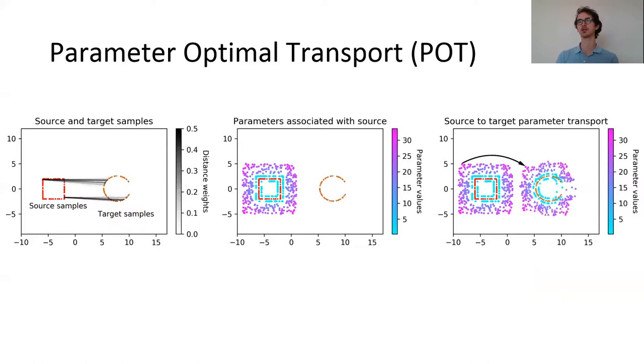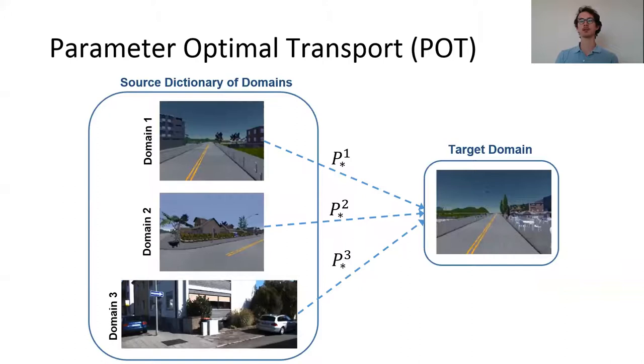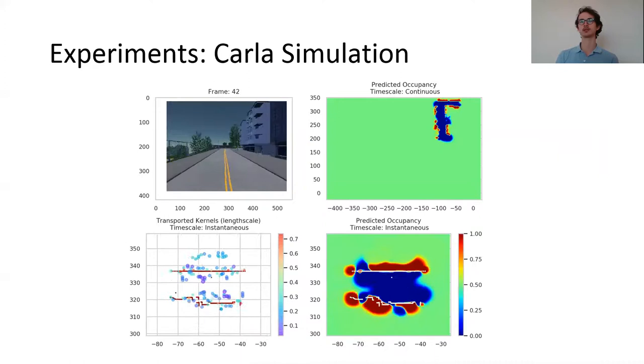What our method, named Parameter Optimal Transport or POT, means in practice is that we are able to take candidate models that have been previously learned and simply transport the closest correspondence. We demonstrate our parameter transport framework on multiple tasks involving both simulated and real-world data.